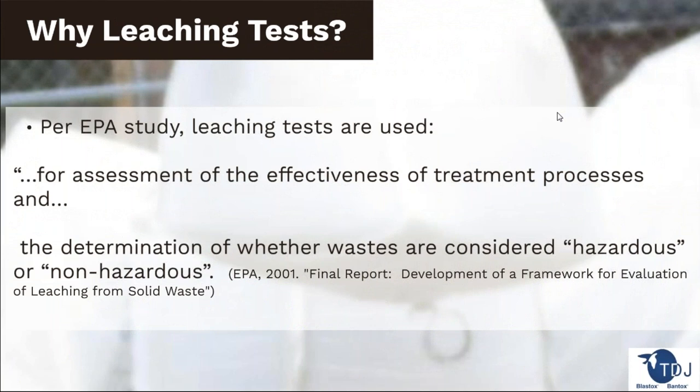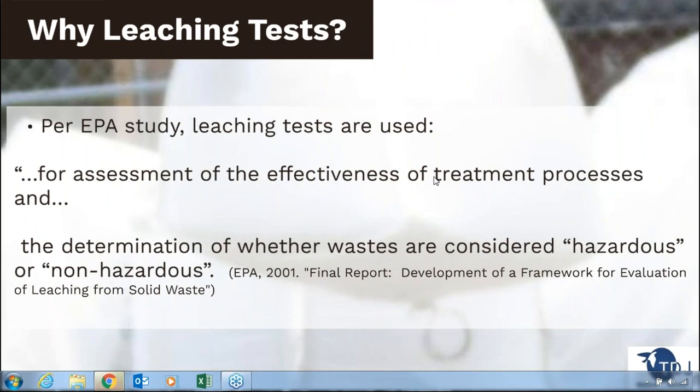We've talked about what leaching is and what a leach test is. Now we need to discuss why do we need to do a leaching test. According to EPA, there are two reasons. The most common application is to determine whether or not a waste is considered hazardous or not hazardous — in particular the TCLP test. Above and beyond simply determining hazardous or non-hazardous, the other reason is to determine the effectiveness of a stabilization or fixation reagent that we may have applied to a waste stream.